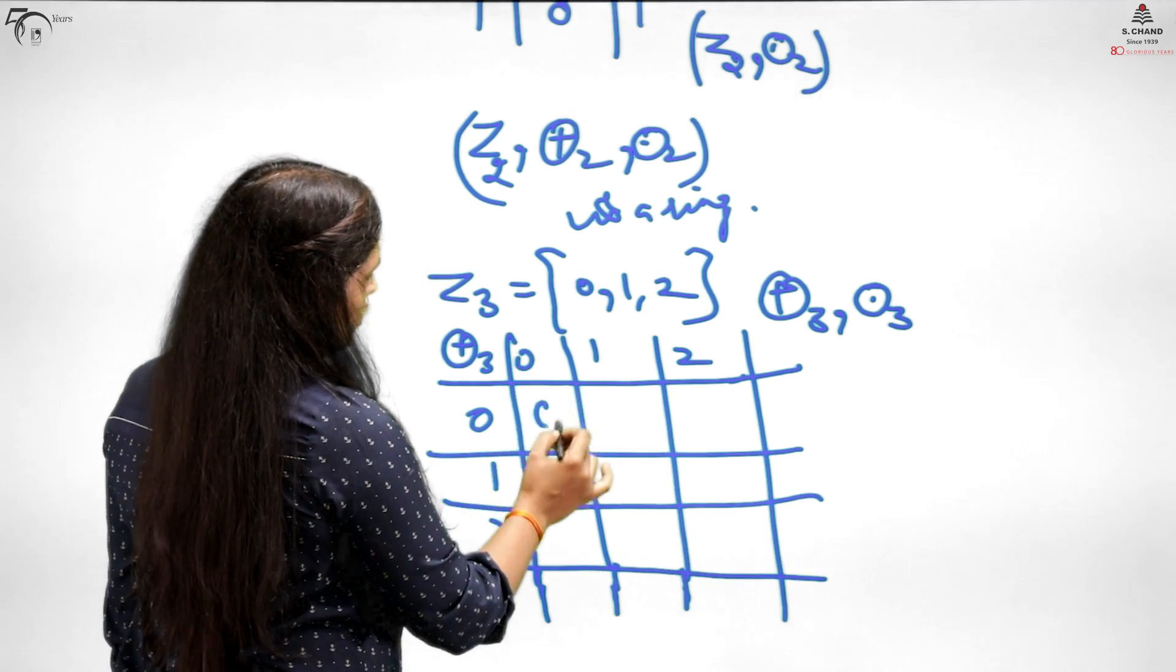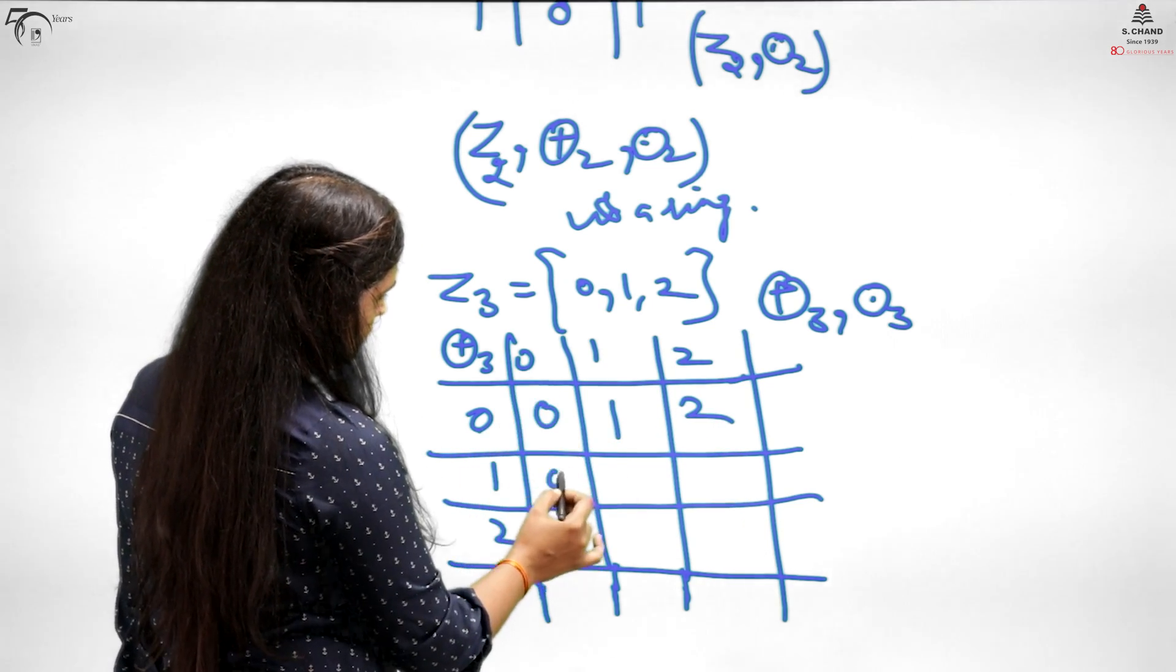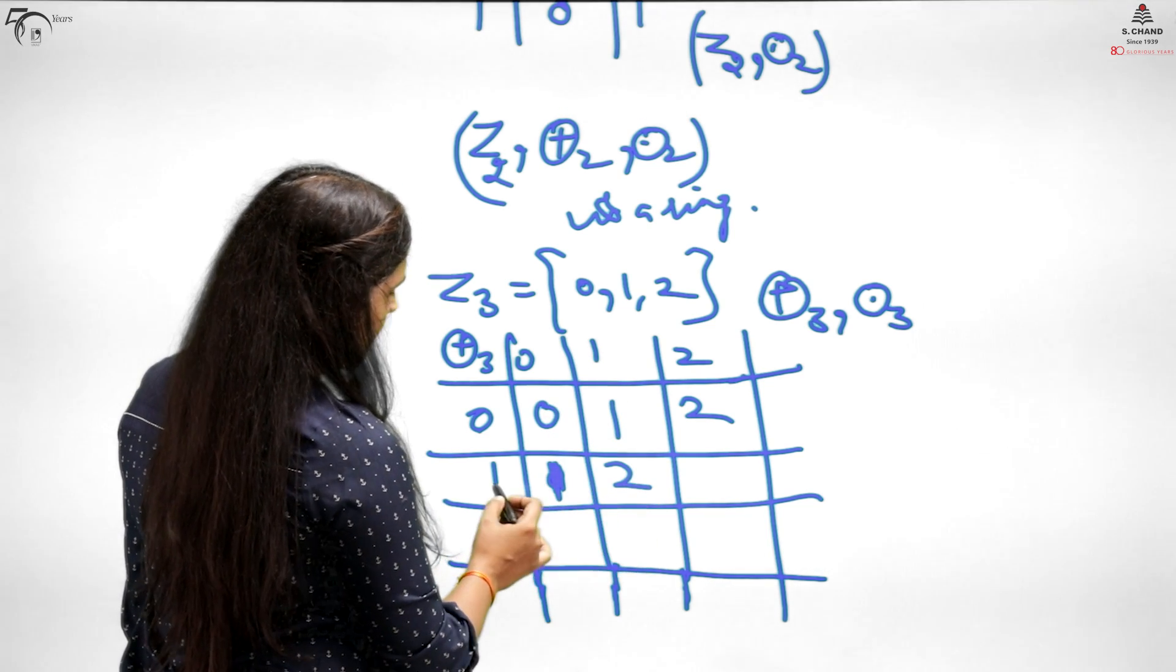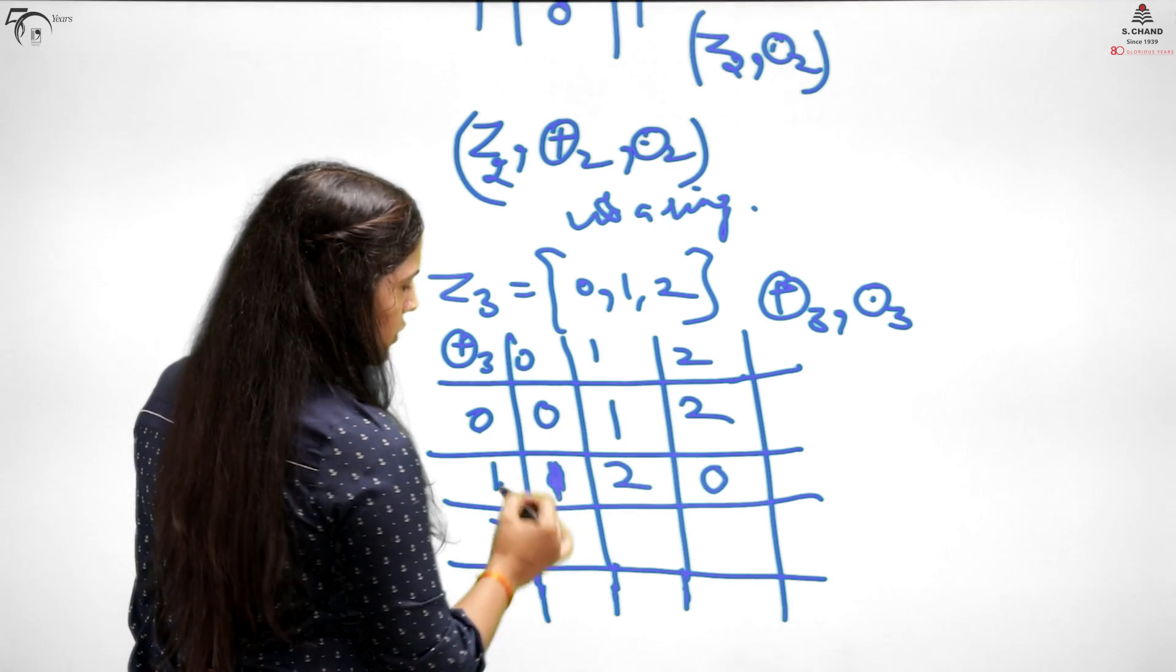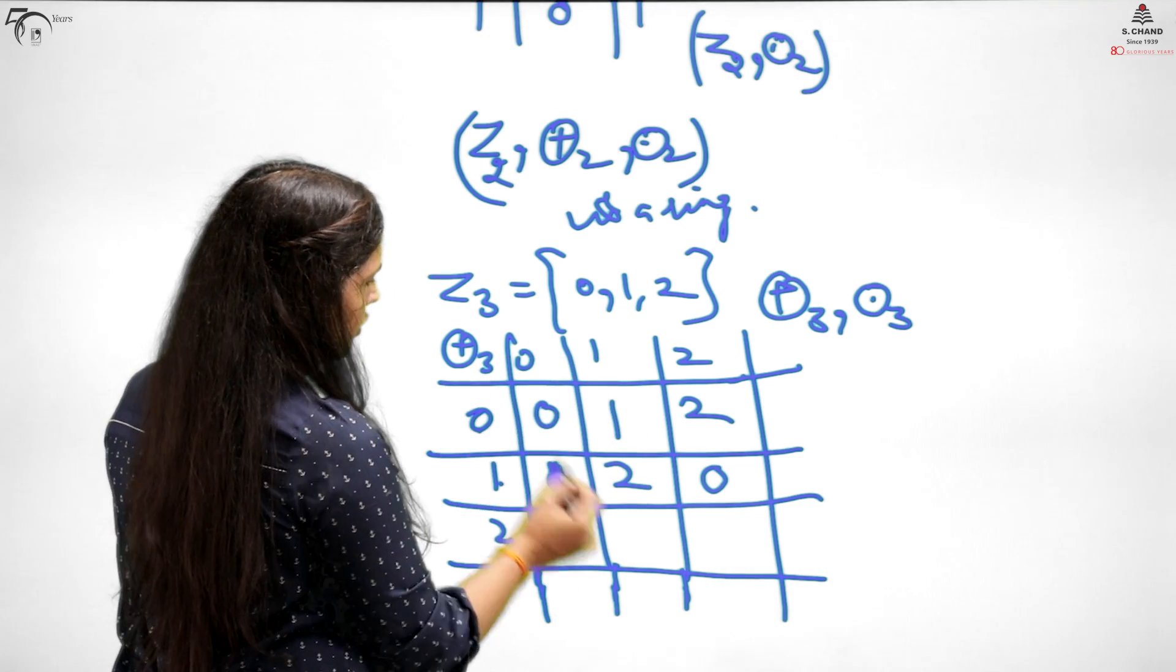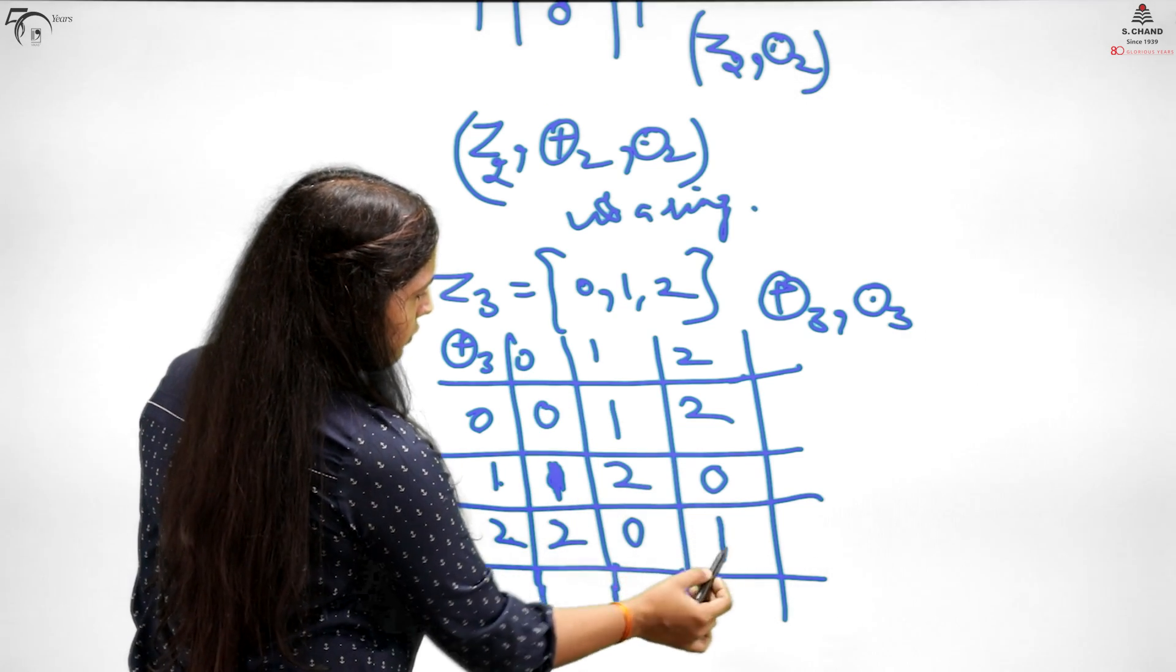With plus and modulo 3, there are 0, 1, 2 elements. So I have that many rows and columns. 0 plus 0 is 0, 0 plus 1 is 1, 0 plus 2 is 2. Then 1 plus 0 is 1, 1 plus 1 is 2 which is less than 3 so the remainder is 2. 1 plus 2 is 3, divide and you get remainder 0. 2 plus 0 is 2, 2 plus 1 is 3, divide and get 0. 2 plus 2 is 4, divide and get remainder 1.